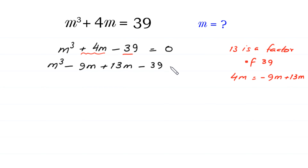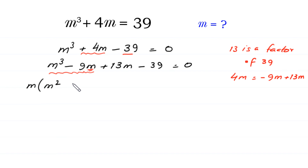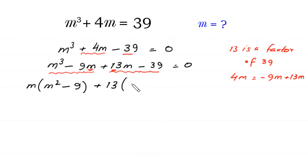So we have m cubed minus 9m plus 13m minus 39 equals 0. From the first two terms, m cubed minus 9m, we factor out m as a common factor, giving m times (m squared minus 9). From the last two terms, 13m minus 39, we factor out 13, giving 13 times (m minus 3). This equals 0.